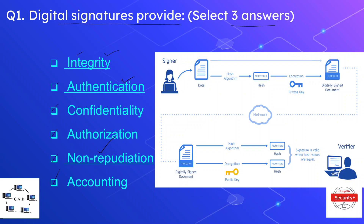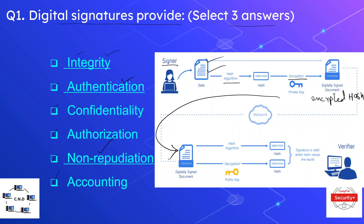This is how the digital signature works. The sender wants to send data and ensure Integrity, Authentication, and Non-Repudiation. First, a hash is taken of the data using a hash algorithm, and then this hash is encrypted using the sender's private key. We now have an encrypted hash plus the original document, and both are sent to the receiver.